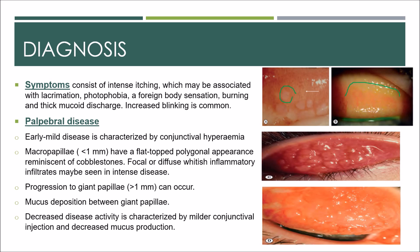Whitish inflammatory infiltrates may be seen in intense disease. Progression to giant papillae, which are more than 1 mm, can occur as adjacent smaller lesions coalesce when dividing septa rupture, also giving a cobblestone appearance. Mucus deposition can occur between the giant papillae, as seen in the picture with clear mucus deposition visible.